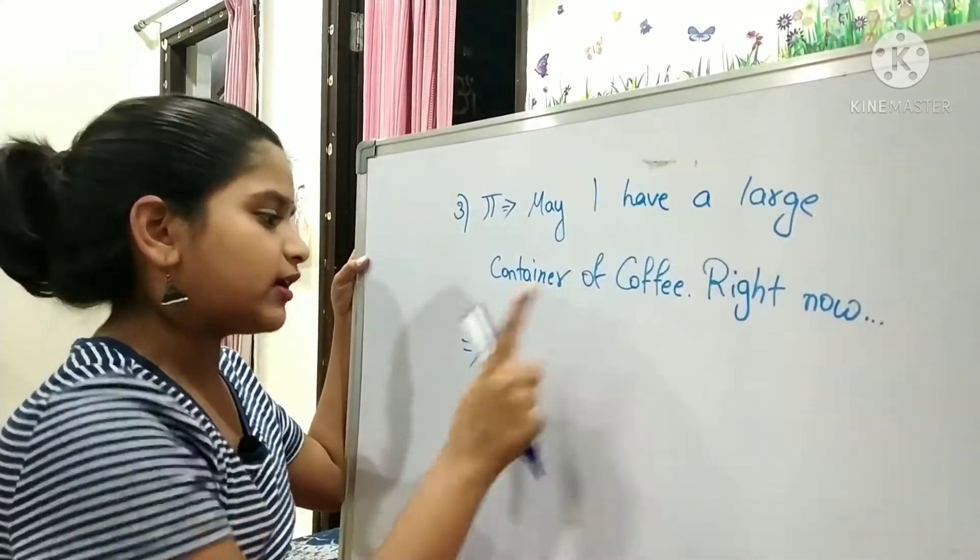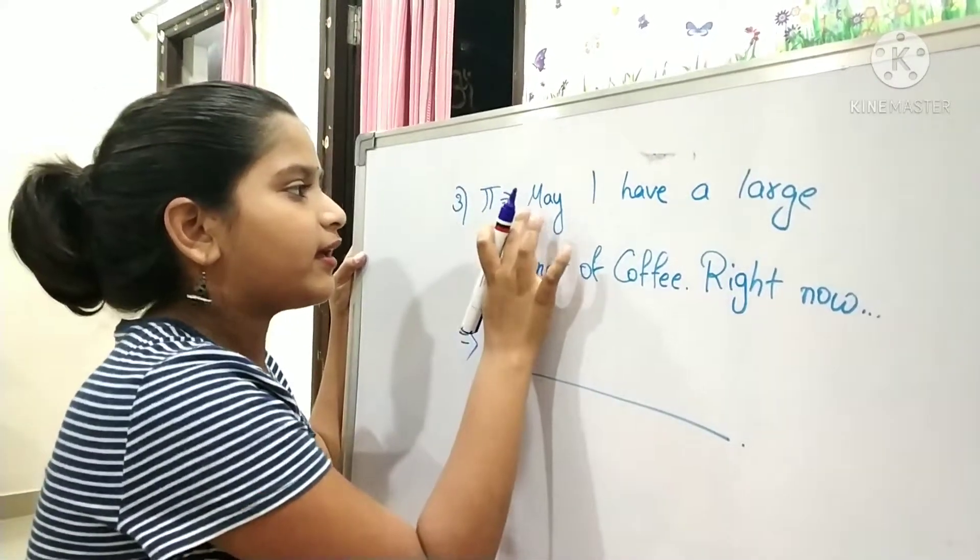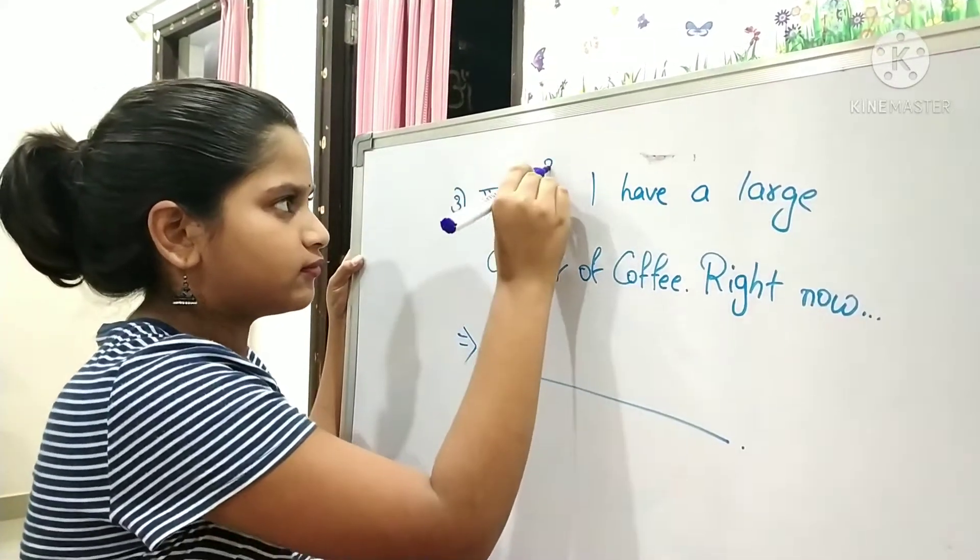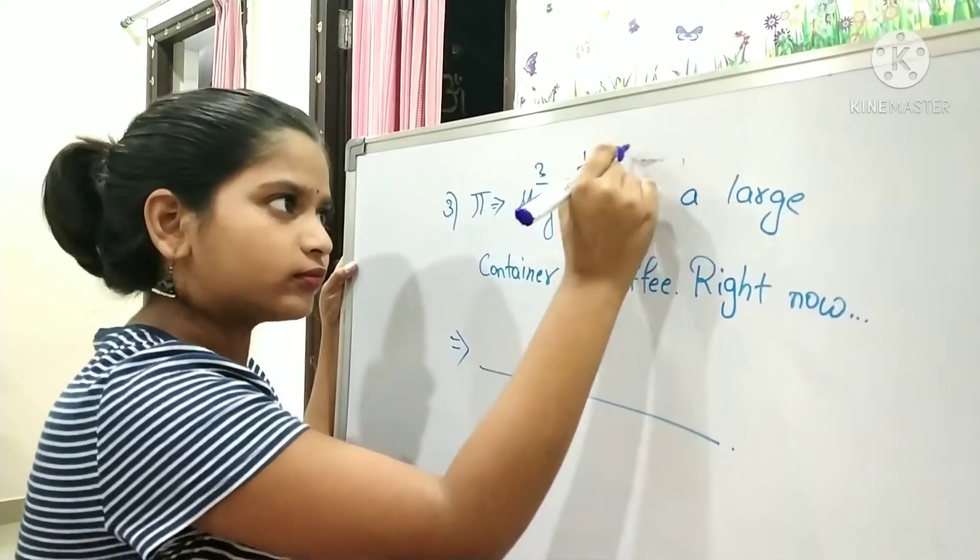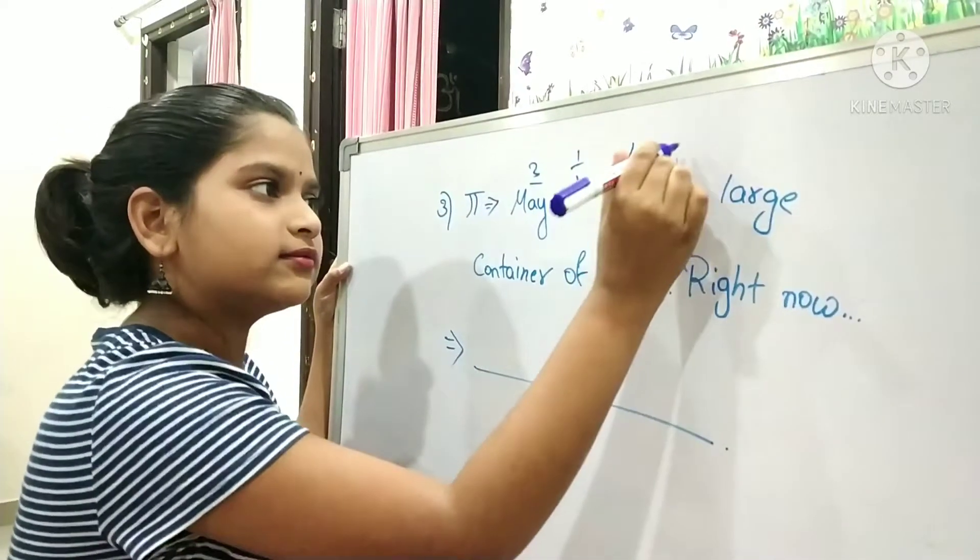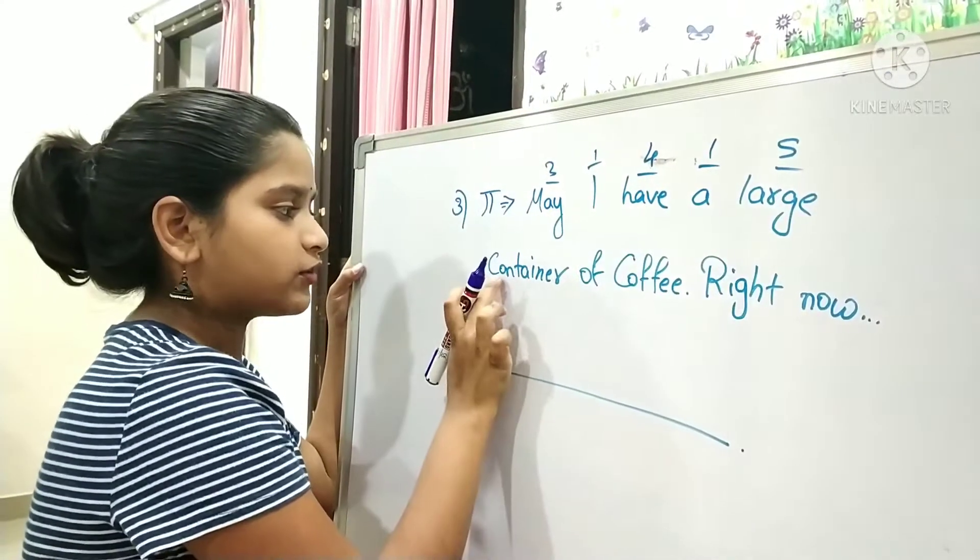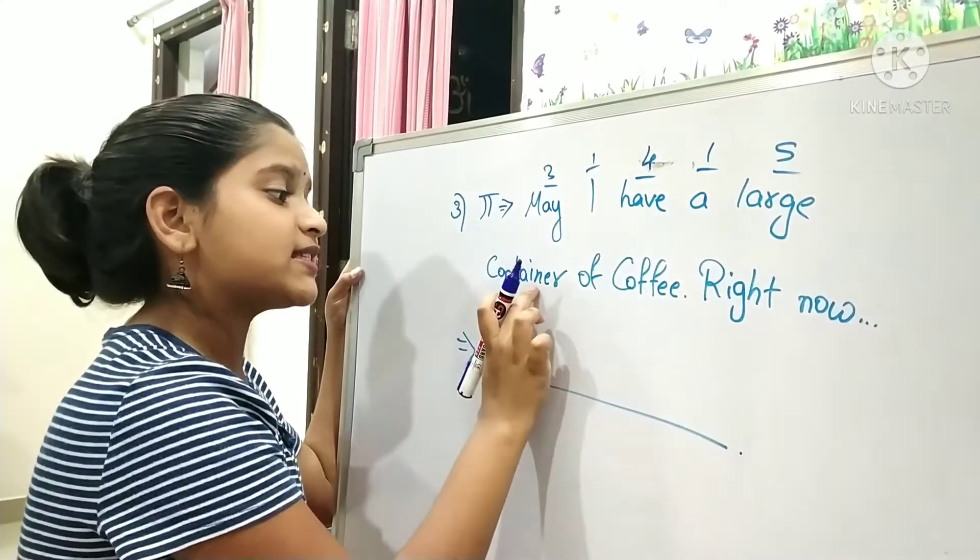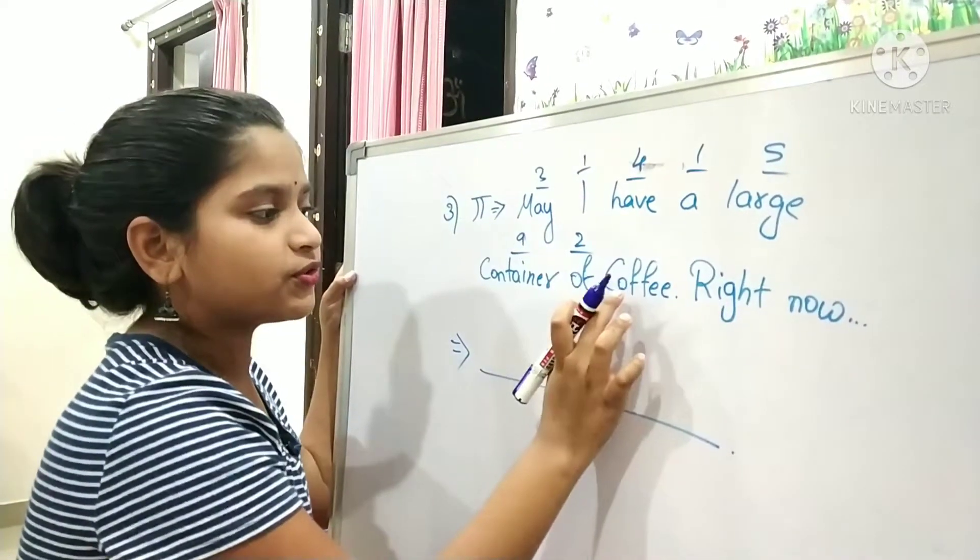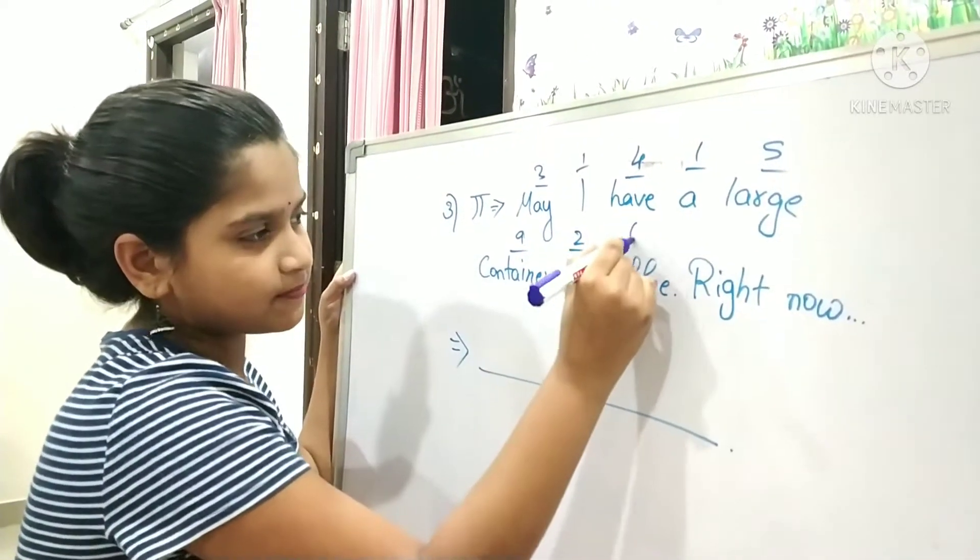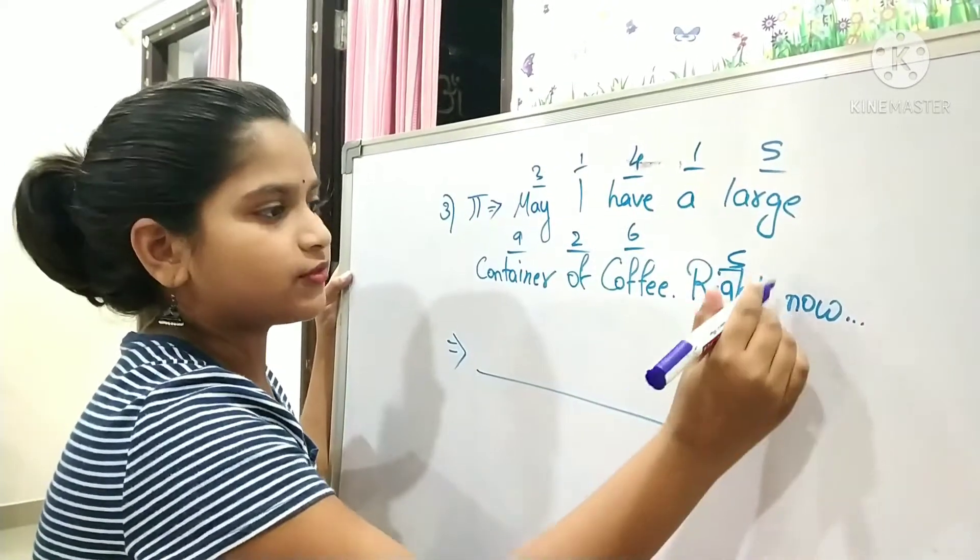May - 3 letters, I - 1 letter, have - 4 letters, a - 1 letter, large - 5 letters, container - 9 letters, of - 2 letters, coffee - 6 letters. So this is leading to the pi value. Now let's write all the numbers down.